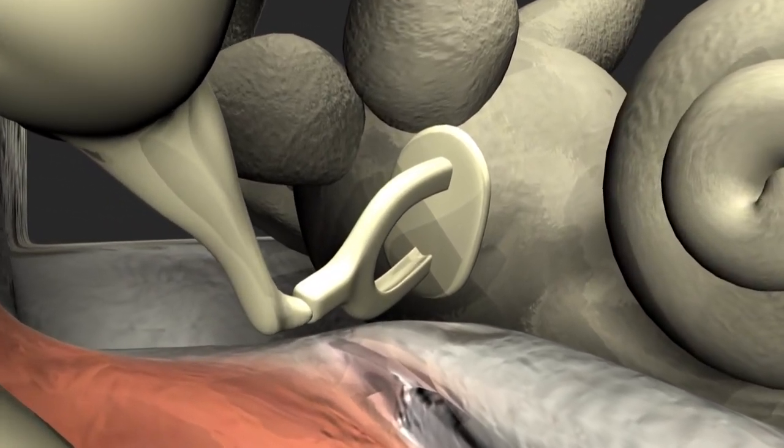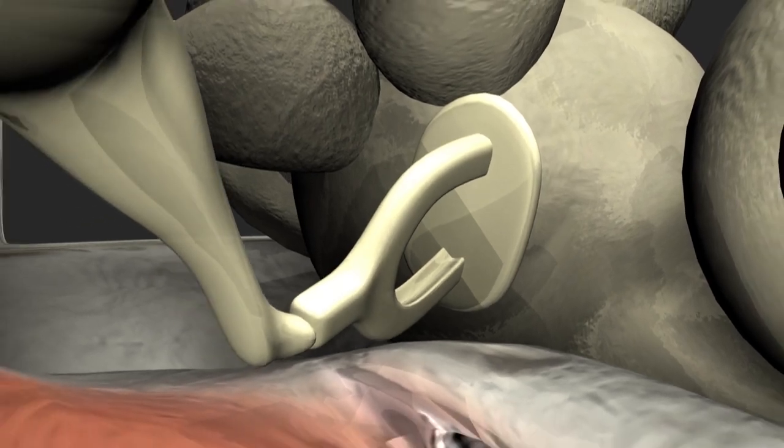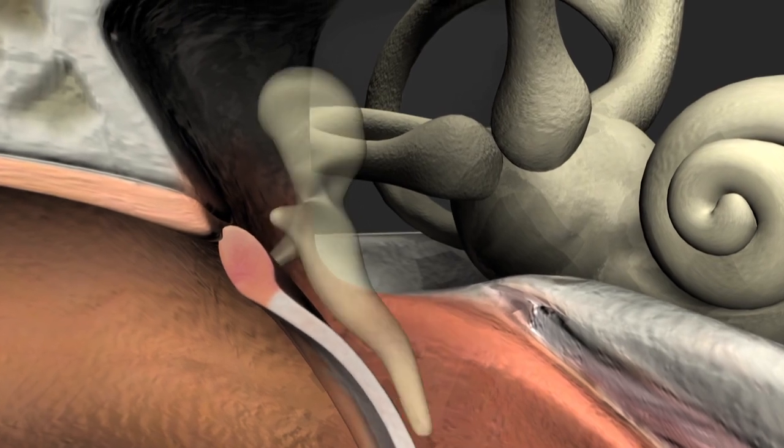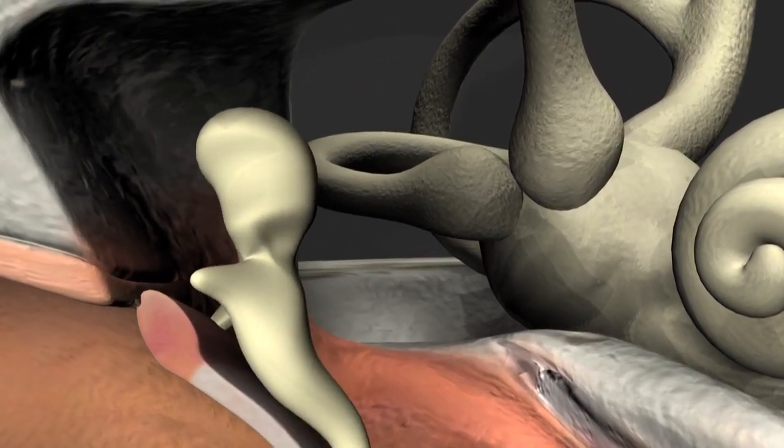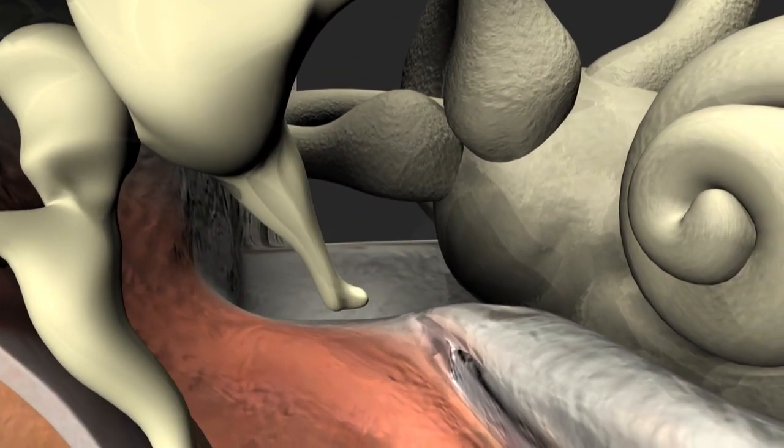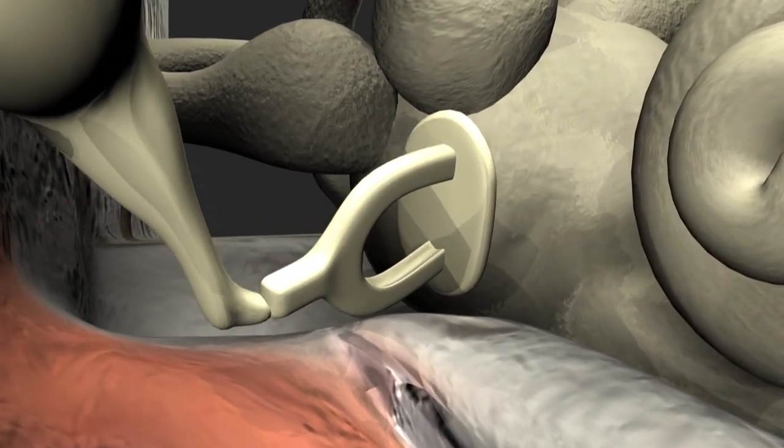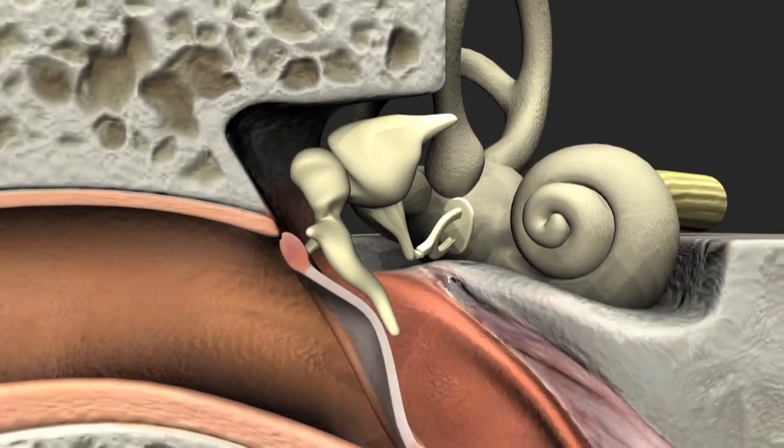Held in place by the annular ligament, the tympanic membrane vibrates in response to sound. The eardrum moves the malleus, which in turn moves the incus and then the stapes. The footplate moves in and out of the oval window and transfers the energy to the endolymph fluid in the cochlea.